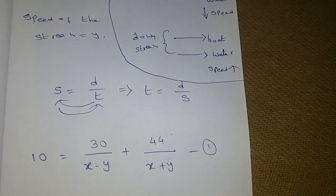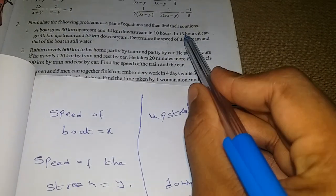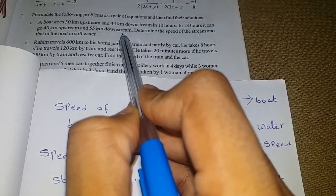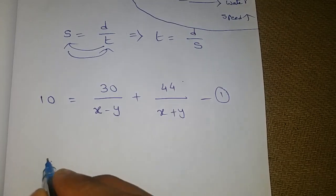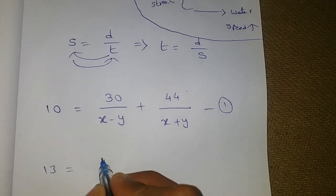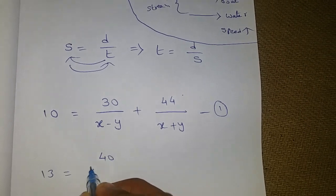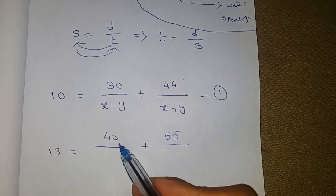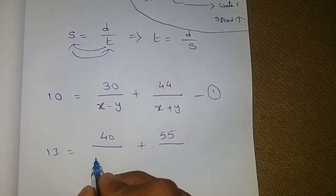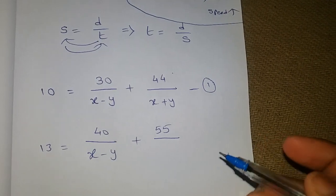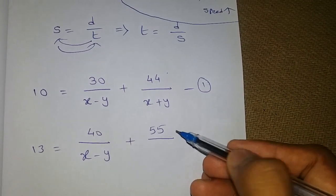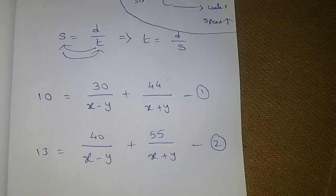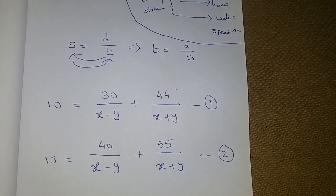Keep that aside. For the second equation: in 13 hours, it can go 40 kilometers upstream and 55 kilometers downstream. This 40 kilometers is upstream, so speed will decrease — boat speed minus water speed. And 55 kilometers is downstream, so speed increases — boat speed plus water speed. Now we have got the second equation, and if we solve these two equations we will get the final answer.